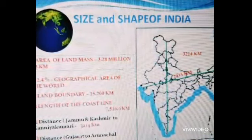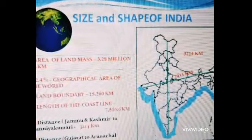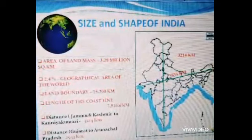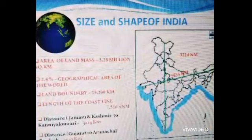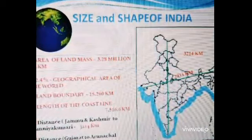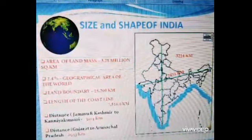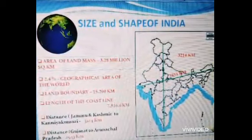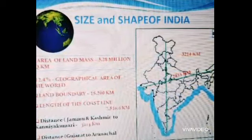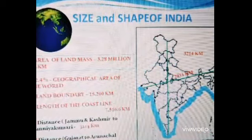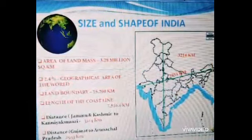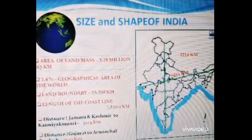India occupies an area of 3.28 million square kilometers. It accounts for 2.4 percentage of the total geographical area of the world. According to its area, India ranks seventh position among the world countries. The distance from Jammu and Kashmir in the north to Kanyakumari in the south is about 3,214 kilometers.